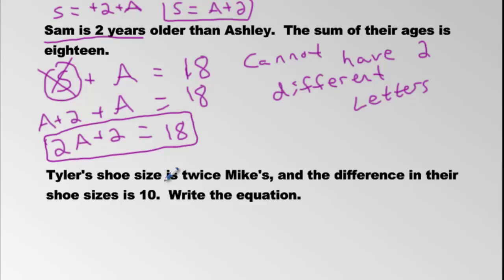How about here? Tyler's shoe size is twice Mike's. So Tyler is twice Mike's, two times M. I'm not going to put a time sign. I'm just going to put them side by side.